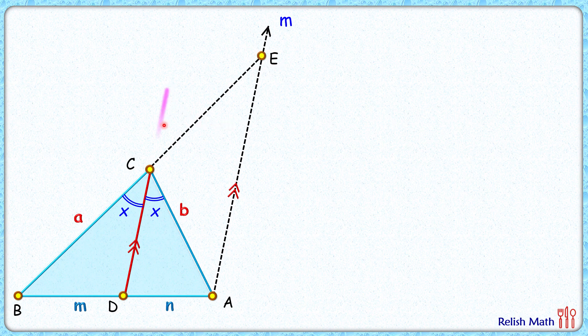Now by construction, CD length and EA length are parallel. CA is your transversal, and this angle and this angle here are alternate interior angles, so its value will be x degrees. Similar logic, EC is the transversal here, and this angle and this angle are corresponding angles and thus they will be equal, or this will be x degrees.